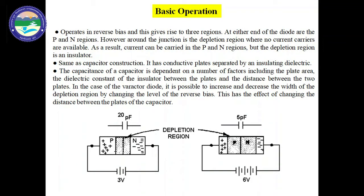The varactor diode should always be operated in reverse bias because in reverse bias condition, electric current does not flow. When a forward bias voltage is applied, the electric current flows through the diode, and as a result the depletion region becomes negligible. Since the depletion region consists of stored charges, those stored charges become negligible, which is undesirable. The varactor diode is designed to store electric charge, not to conduct electric current.